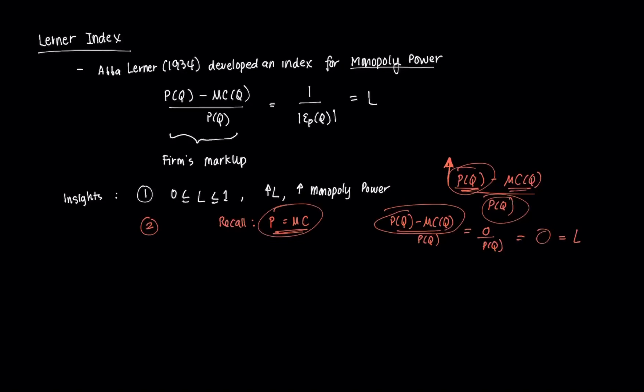If the index is above 0, then the firm has some form of monopoly power, and the closer it is to 1, the greater the market power. However, the last consideration is that considerable monopoly power doesn't necessarily guarantee high profits. We might falsely conclude that the closer the index value is to 1, the more profitable the firm is — but that's not necessarily the case, because profit depends on average cost relative to price. A firm may have more monopoly power than another yet earn a lower profit due to higher average costs.